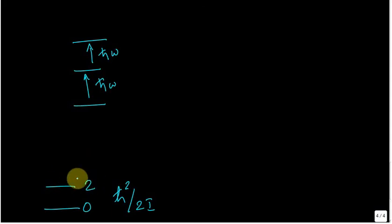So 1, 2, 2 into 3 is 6, and then 3 into 4 is 12. Let me go much higher, 12 somewhere over there. So you see the gap in this case is 2 in units of h cross square by 2i. Here it is 4, here it is 6 and the next one is 8, 10, 12 so on and so forth.